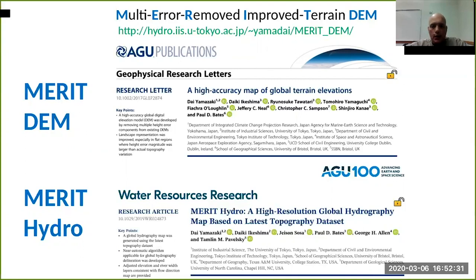One year later, in 2019, he also released MERIT-Hydro. MERIT-Hydro is a digital elevation model adjusted for hydraulic analysis, and it is able to be used to extract hydrography at global context. We will see how these two terrain models have been used in creating geomorphometry features.